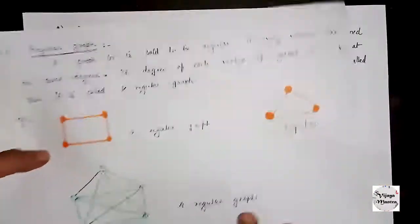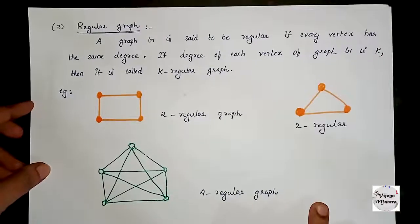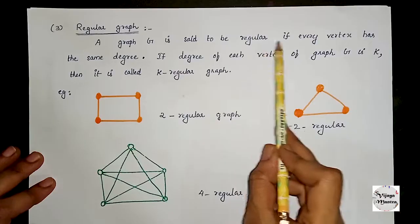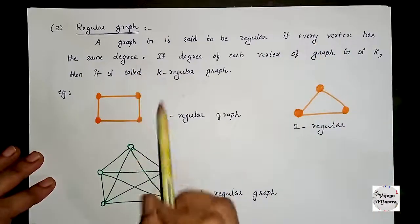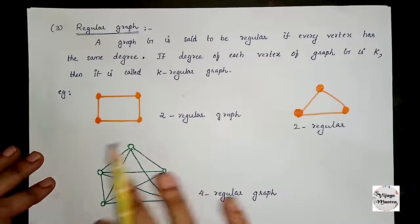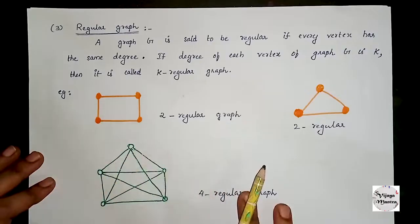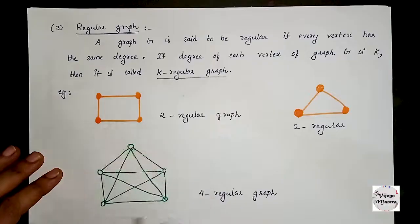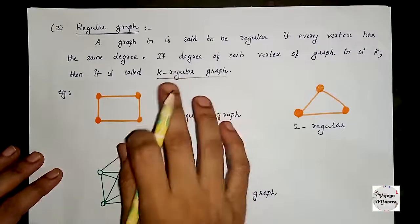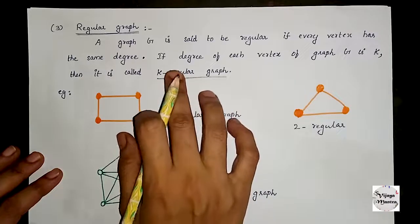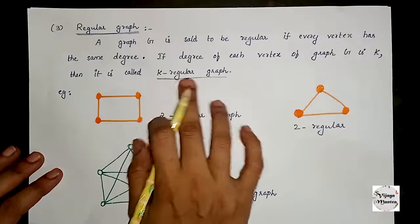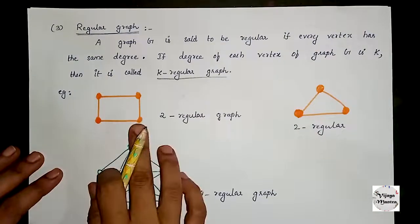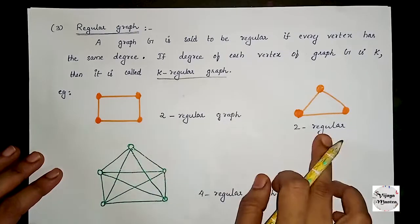The next type of graph is the regular graph. A graph G is said to be regular if every vertex has the same degree. If the degree of each vertex of graph G is k, then it is called a k-regular graph. For example, this graph is a 2-regular graph.